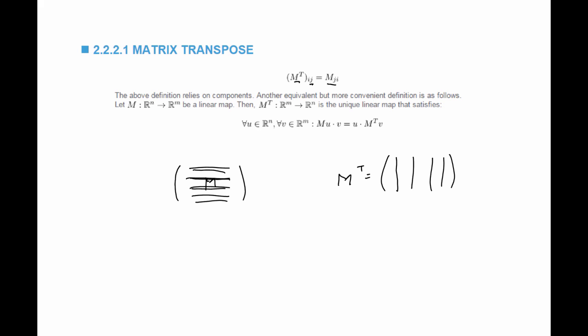The component ij of M transpose is actually the initial component M_ji. So this definition depends on components. Another equivalent but more convenient definition is: if I have a matrix from an n-dimensional vector space to an m-dimensional vector space, M transpose is a matrix from m-dimensional space to n-dimensional space, and satisfies: for every u in R^n, for every v in R^m, Mu dot v is equal to u dot M-transpose v. The nice thing about this definition is that it does not rely on components.